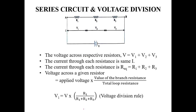In a series circuit with three resistors R1, R2, and R3 connected in series, the voltage drop across each resistor is different, but the current flowing through the circuit is the same. The total voltage V equals V1 plus V2 plus V3. A practical example is serial lights — the same current flows through all bulbs.